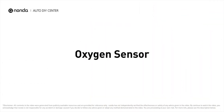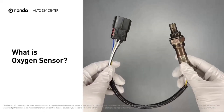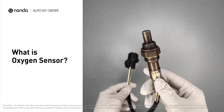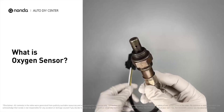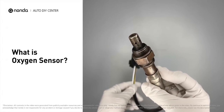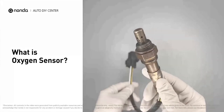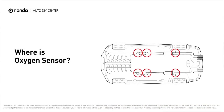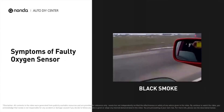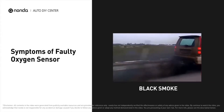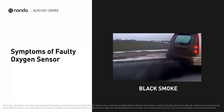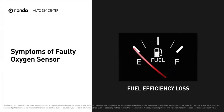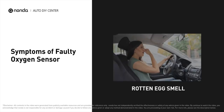Oxygen sensor. Oxygen sensors, also known as O2 sensors, help determine whether the air-fuel ratio of a combustion engine is rich or lean in real time. Oxygen sensors are located before and after the catalytic converter. A faulty oxygen sensor may cause black smoke to come out from the exhaust, fuel efficiency loss, and a rotten egg smell.